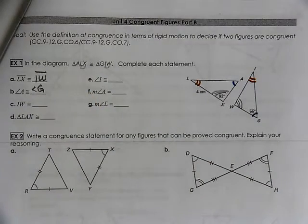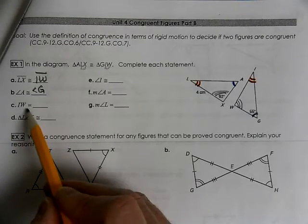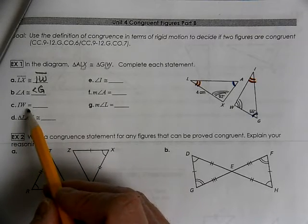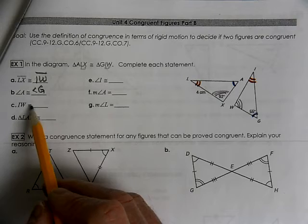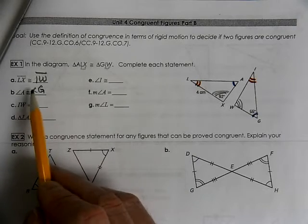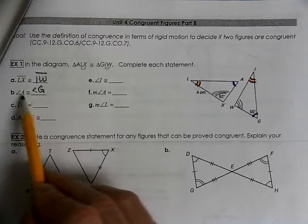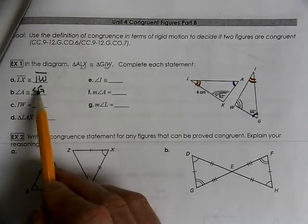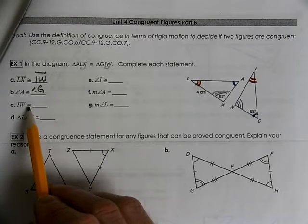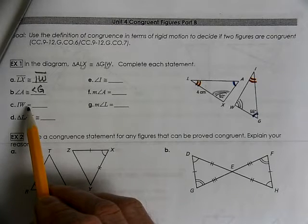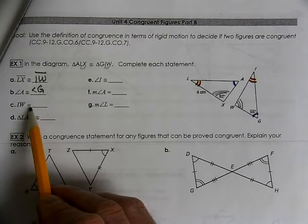Now here, this is a little bit different. This has an equal sign. The equal sign is telling us that we are looking for a number. A congruent symbol is looking for the same size and shape. But in this case, with the equal sign, we are looking for a number.